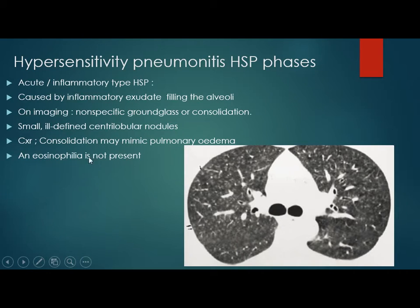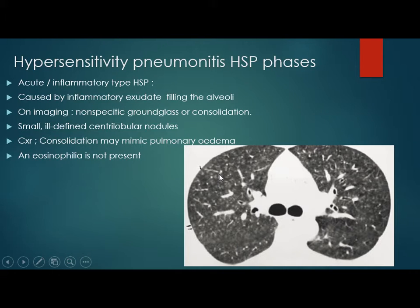Eosinophilia is not present in hypersensitivity pneumonitis. Do you think bronchiolitis is present in this patient? Yes, because these are centrilobular nodules — you should include bronchiolitis. The bronchium is affected. Early on, just the alveoli — the alveolitis — will be affected.